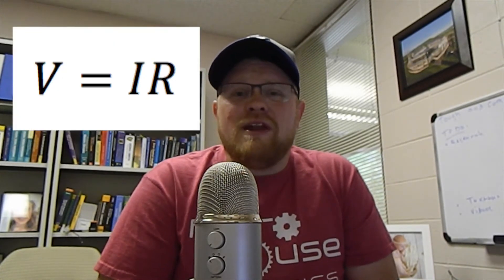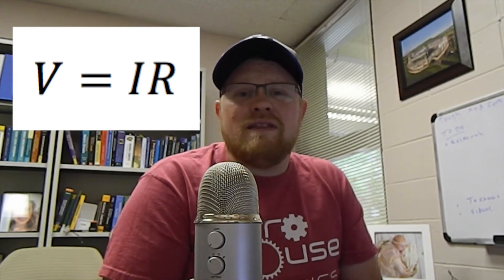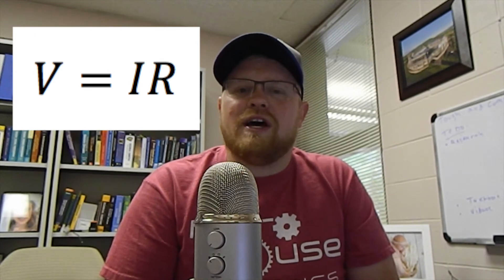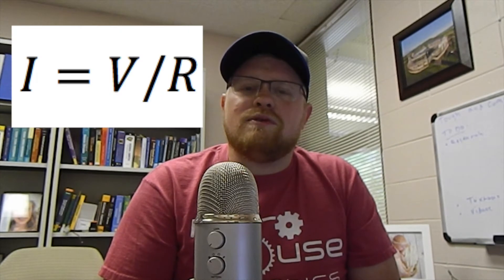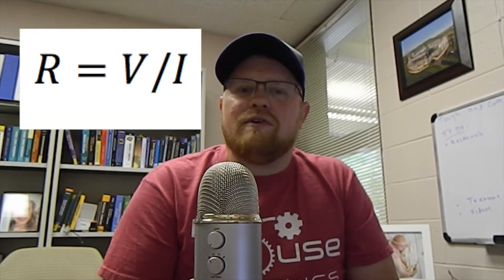Essentially, it says that the voltage dissipated across a resistor is equal to that resistance multiplied by the current through it, or V equals IR. It's easy to come up with alternate formulations using algebra: I is equal to V over R, or R is equal to V over I. The short thing to say is that the voltage dissipated across a resistor is proportional to the current through that resistor.